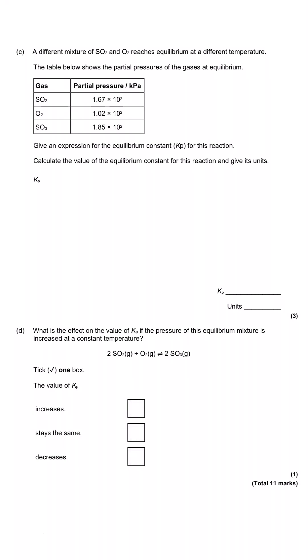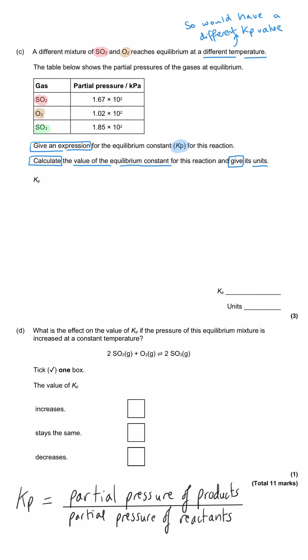A different mixture of SO2 and oxygen reaches equilibrium at a different pressure. The table below shows the partial pressures of the gases at equilibrium. Give an expression for the equilibrium constant Kp for this reaction and calculate the value of the equilibrium constant and give its units. So the expression for Kp tells you a numerical value that is the relationship between the partial pressure of the products compared to the reactants.